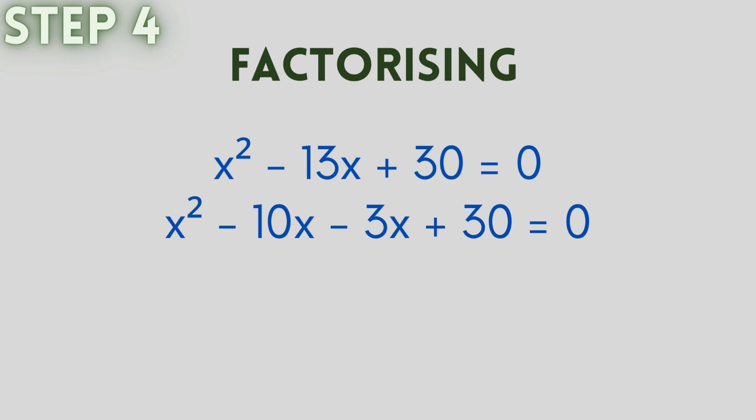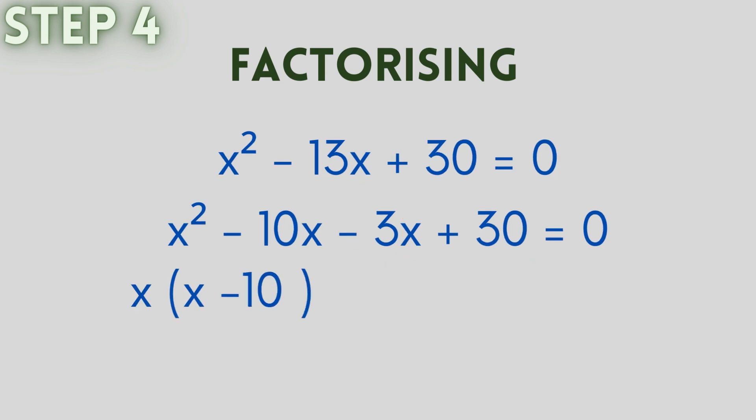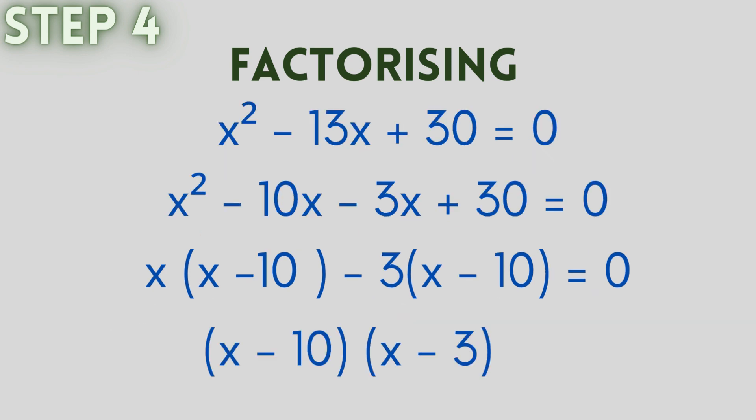Now we will take x as common from the first two terms and 3 as common from the last two terms. So we would get x multiplied by (x - 10) minus 3 multiplied by (x - 10). Now taking (x - 10) as common from the terms shown, the equation will look like this: (x - 10) multiplied by (x - 3) = 0.